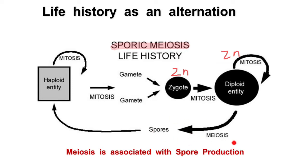As you know, meiosis always reduces the number of chromosomes. So instead of a diploid organism, spores are going to be 1n — they will be haploid.